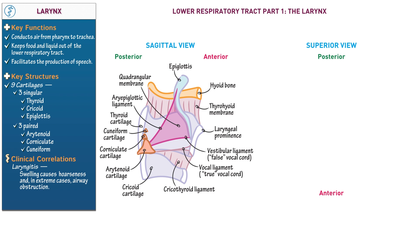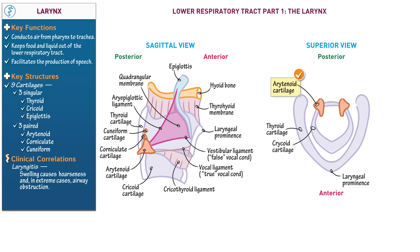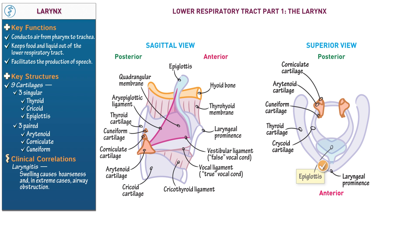Now let's draw the larynx in superior view to better visualize the relationships between the true and false vocal cords. Indicate anterior and posterior and begin with the singular cartilages: first draw the cricoid cartilage, then notice the subtle V-shape and the laryngeal prominence of the thyroid cartilage. Skip the epiglottis for now and show the paired cartilages from inferior to superior — arytenoid cartilages, corniculate cartilages, and cuneiform cartilages. Note that the cuneiform cartilages lie slightly anterior to the corniculate cartilages. Show that the epiglottis, the cartilaginous flap that closes off the larynx, arises from the internal aspect of the thyroid cartilage.